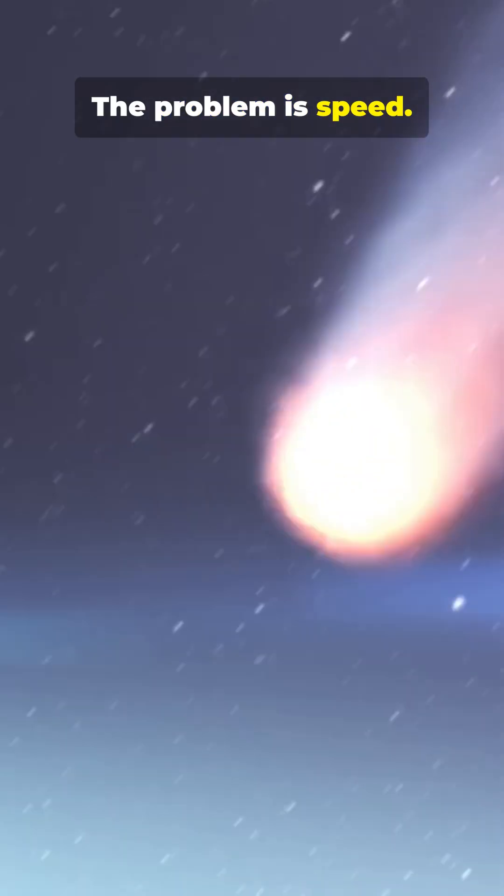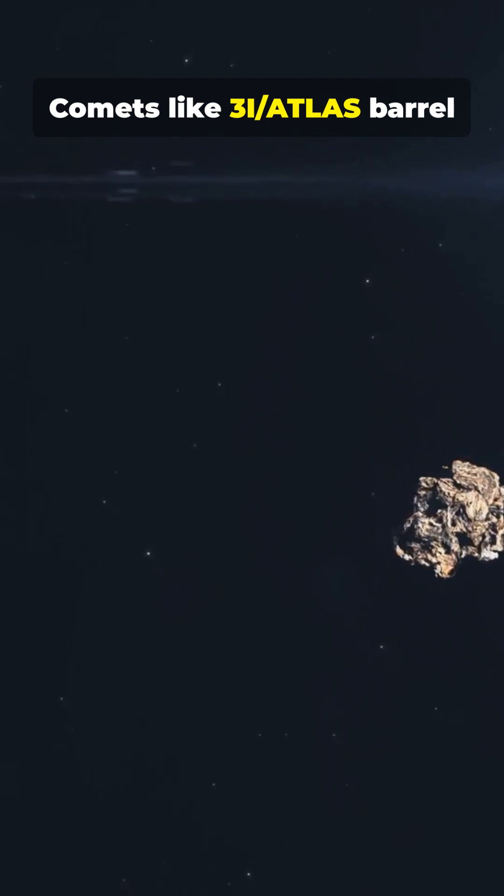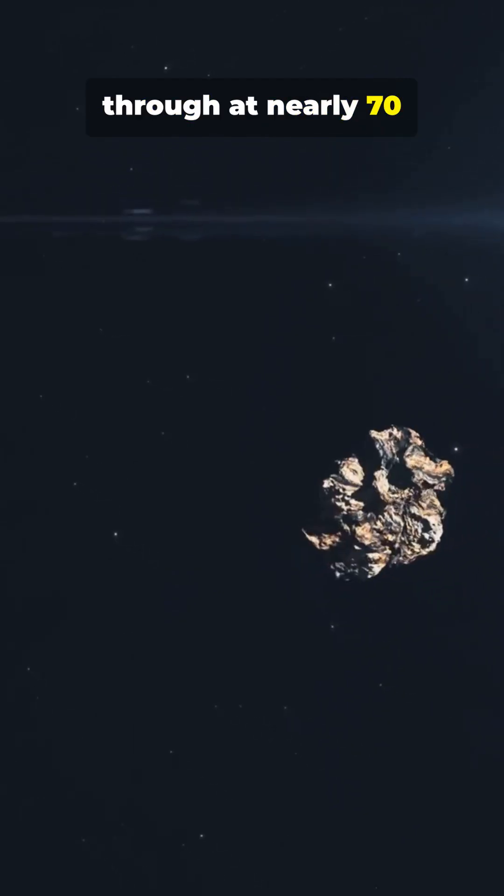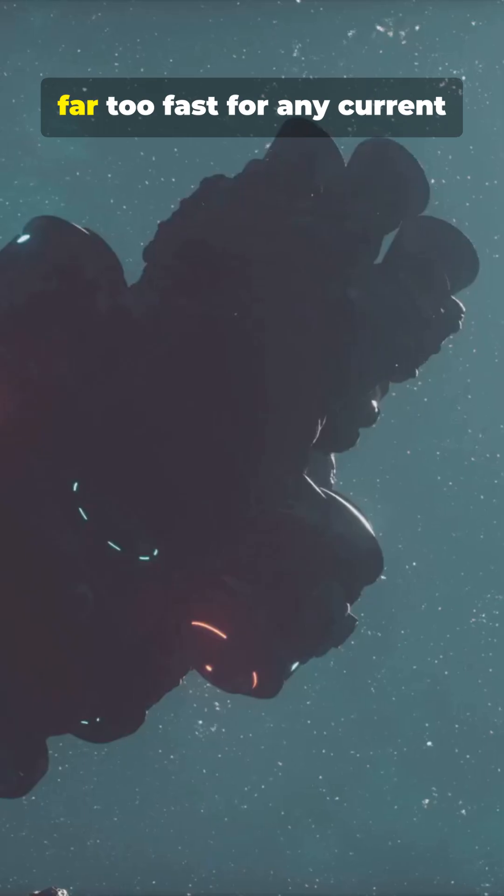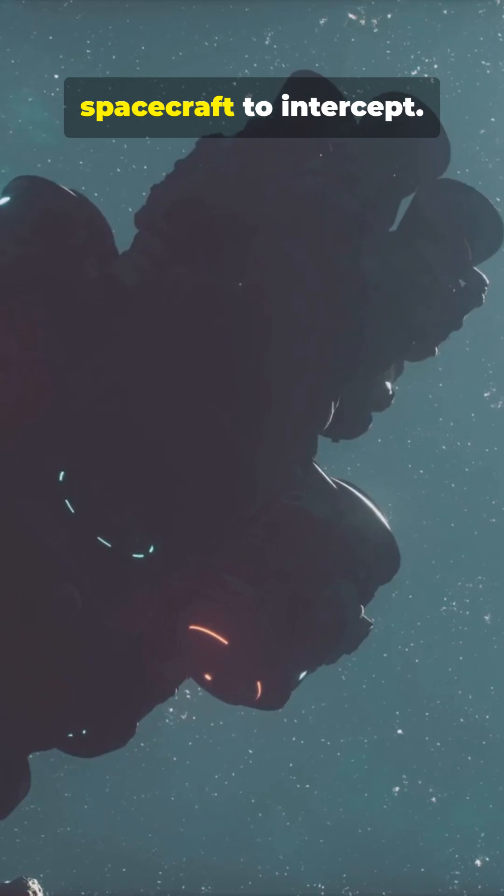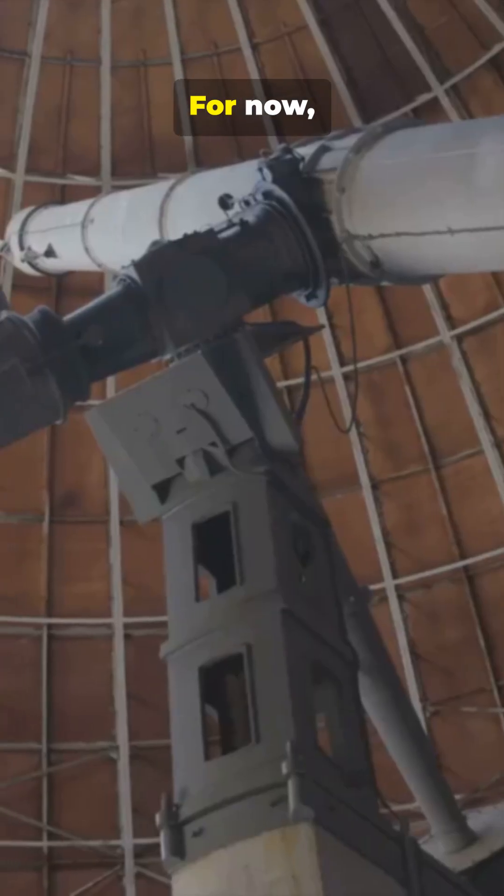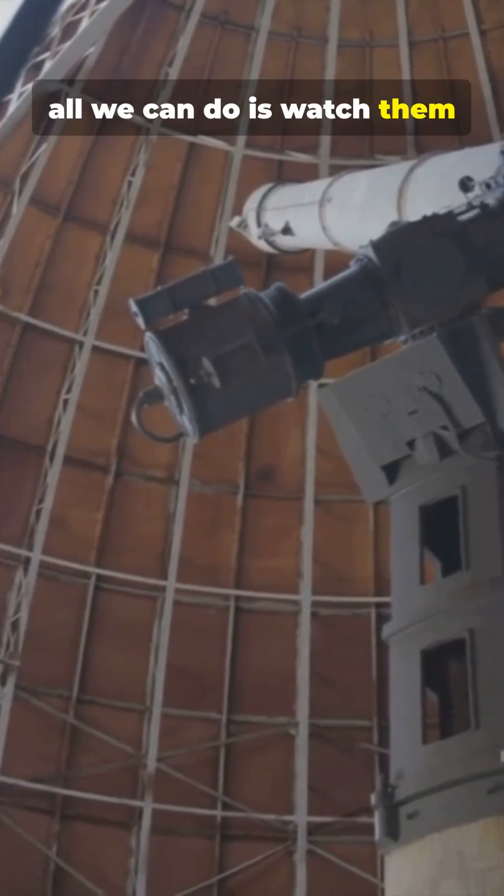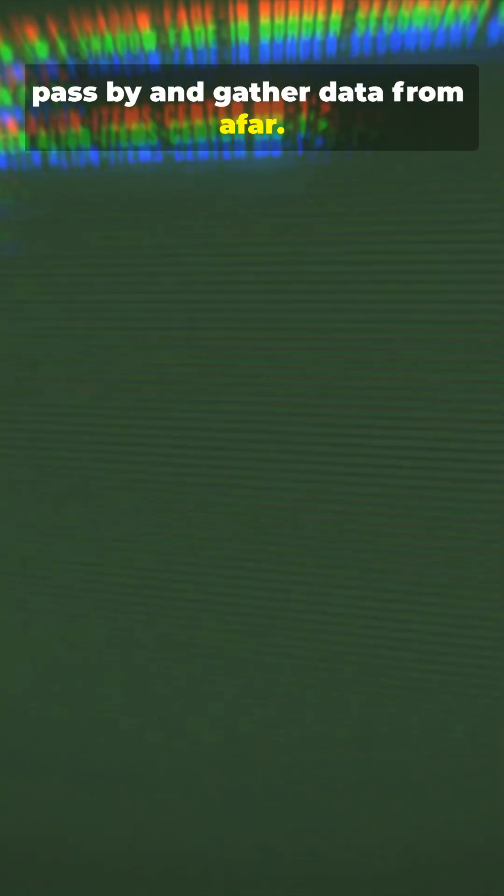The problem is speed. Comets like 3i Atlas barrel through at nearly 70 kilometers per second, far too fast for any current spacecraft to intercept. For now, all we can do is watch them pass by and gather data from afar.